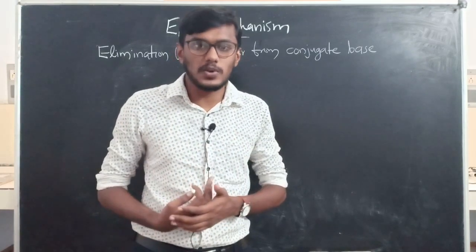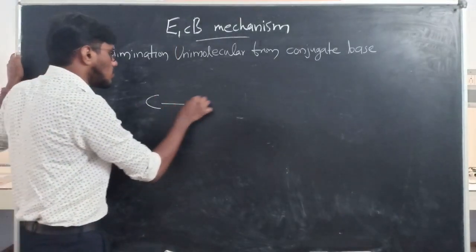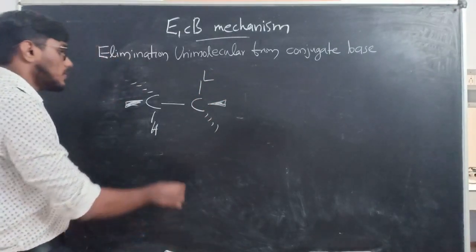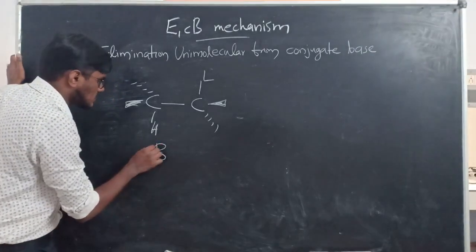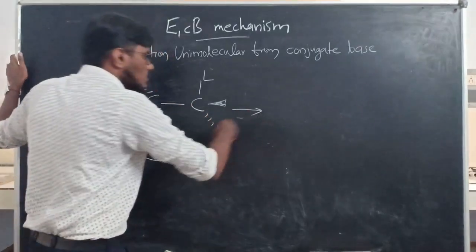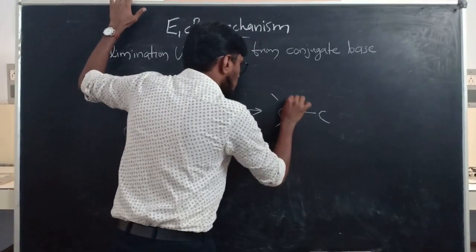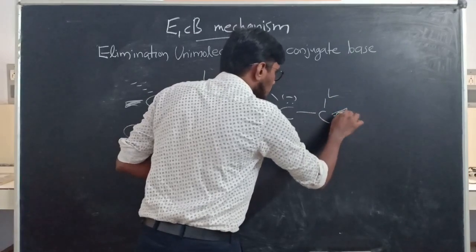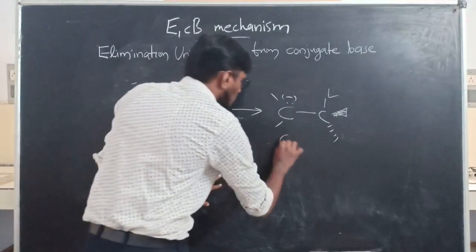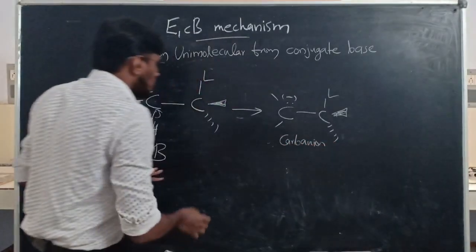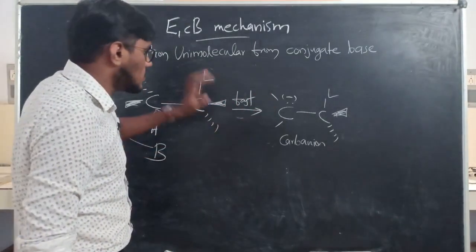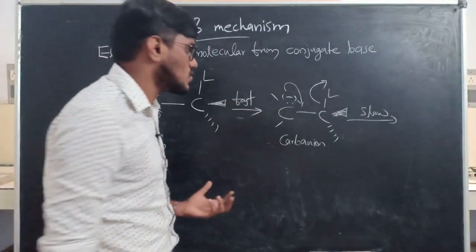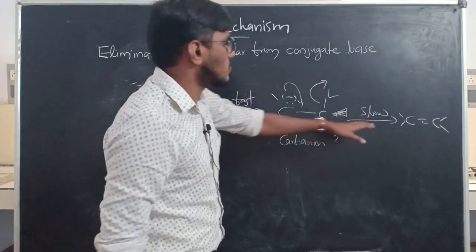In E1 and E1CB mechanism the order is reversed. For example, consider a compound with a hydrogen and a leaving group L. In the first step of E1CB mechanism, a base abstracts the proton and forms a carbanion intermediate — because the bonding electrons shift, forming a carbanion. This is the intermediate. In the next step, which is the slow step, the leaving group leaves.